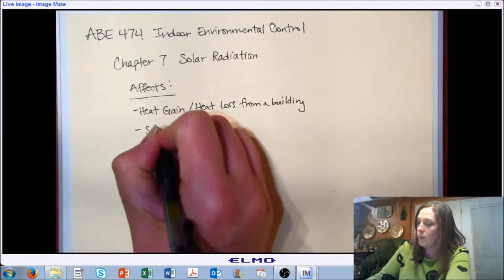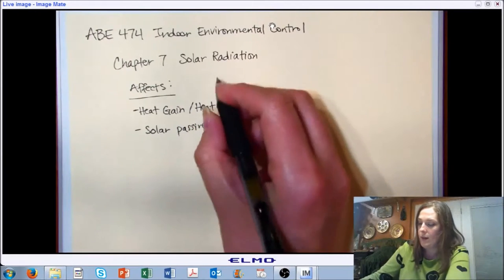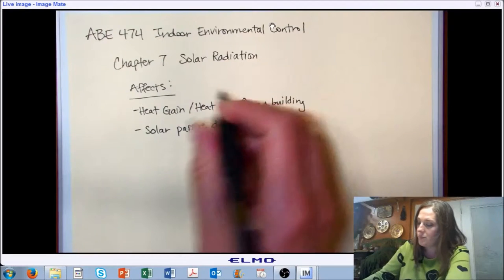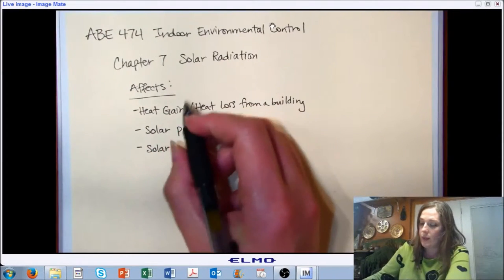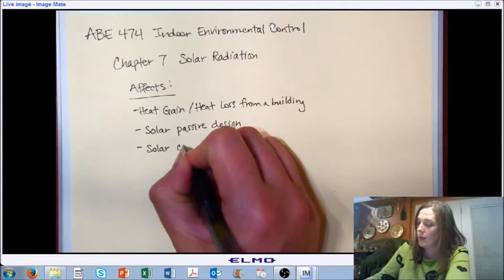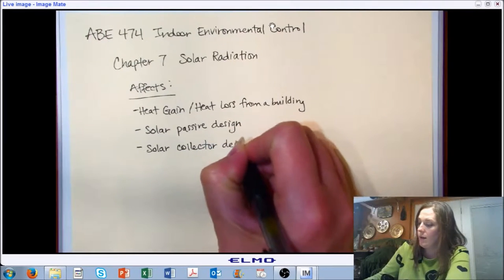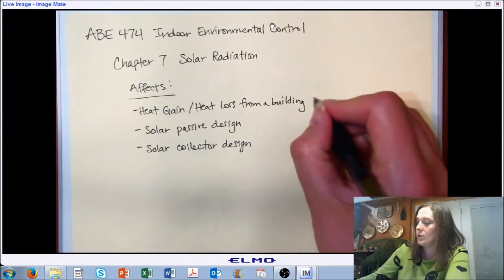Specifically, if we wanted to work with a system that has a solar passive design, we absolutely need to be able to calculate and understand the impacts of solar radiation. We can extend this out to applications that may or may not be related to indoor environmental control. If we were looking at solar collectors, we would be very interested in understanding the dynamics of the solar radiation onto a surface.